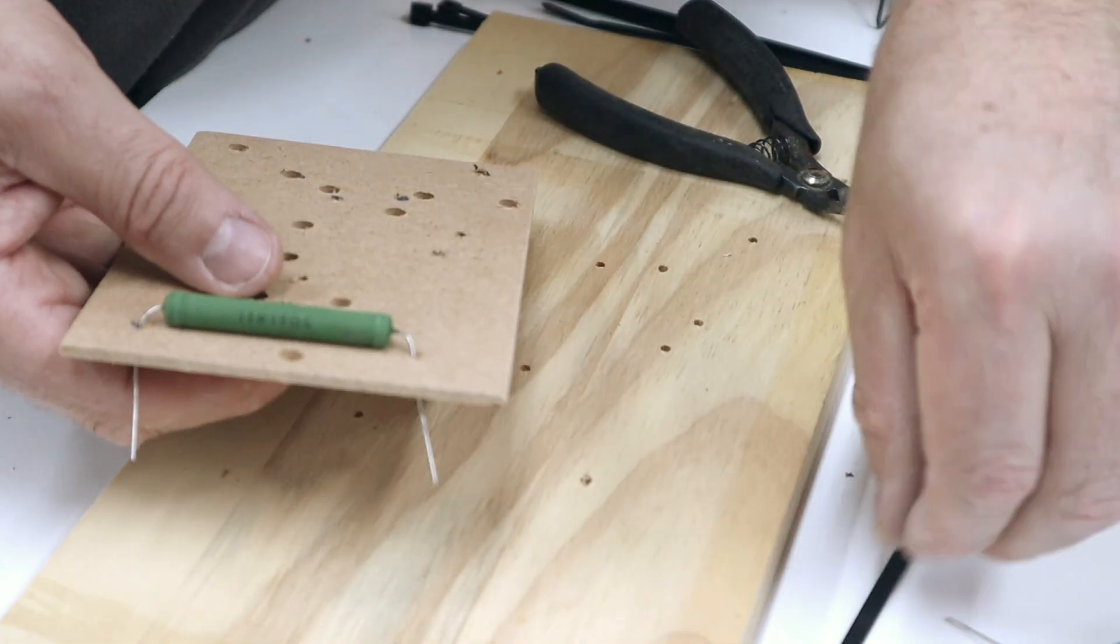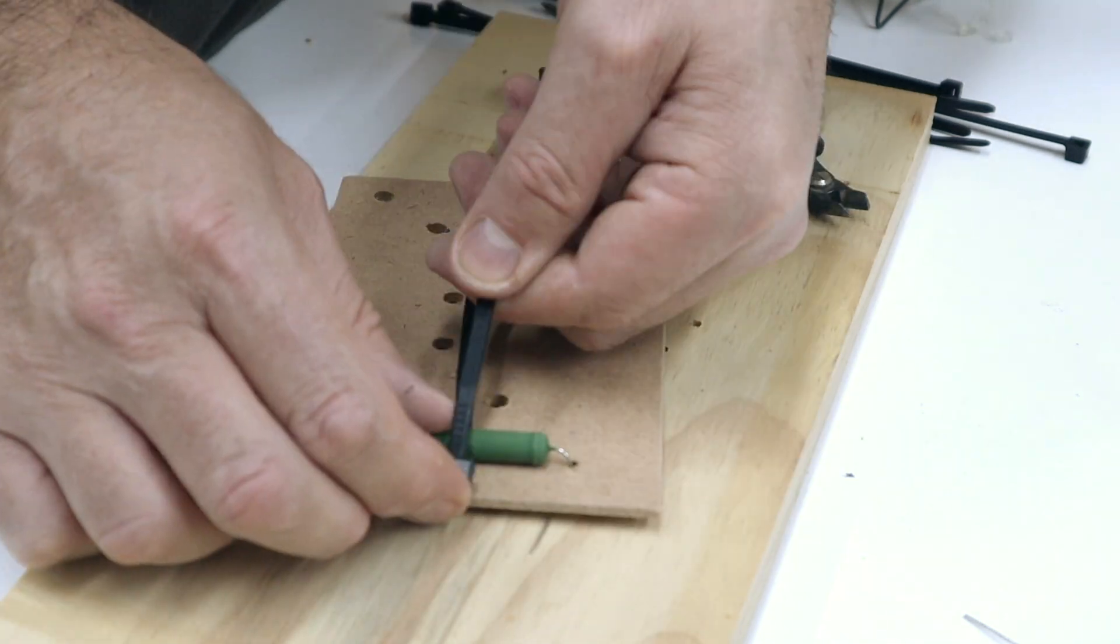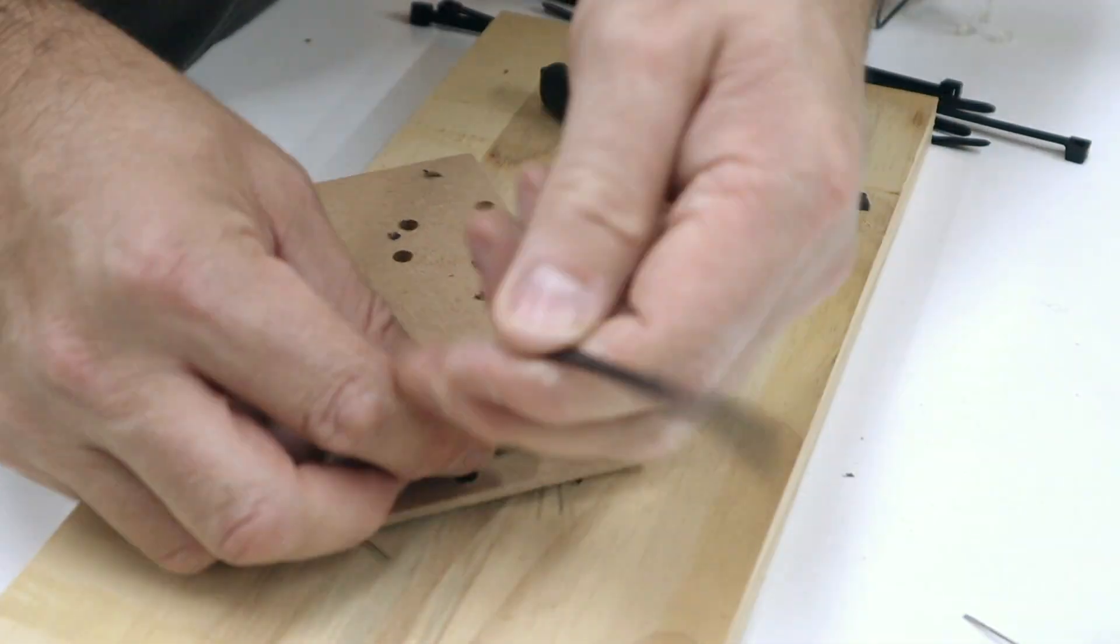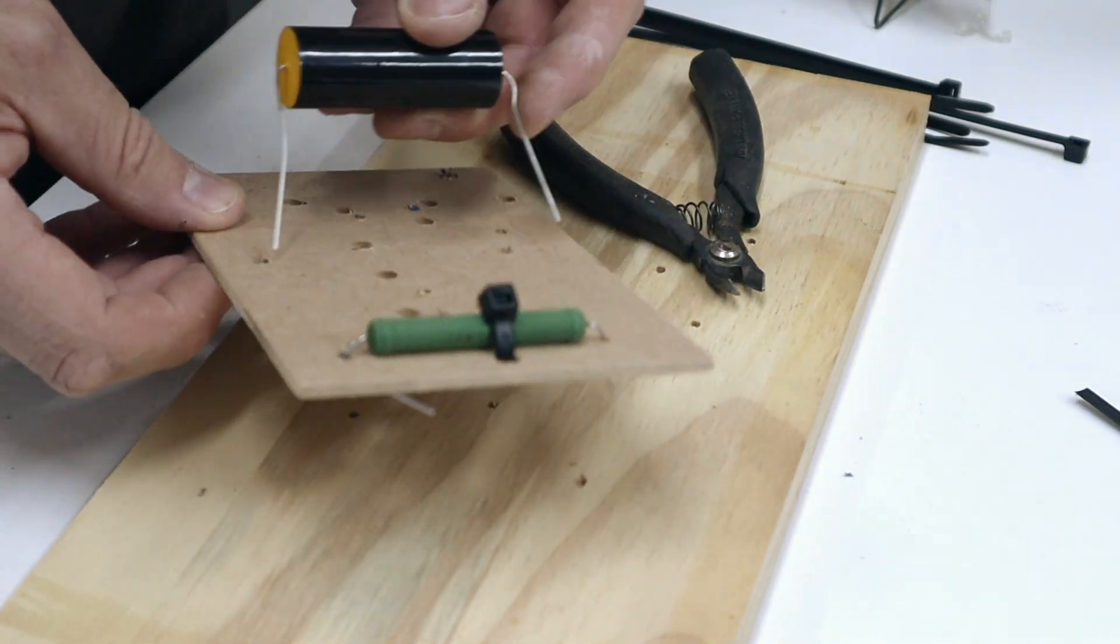The second option is also point to point wiring but underneath the board. For this option you will need to drill additional holes in the board for the component leads to pass through.